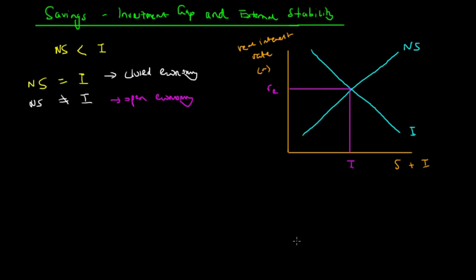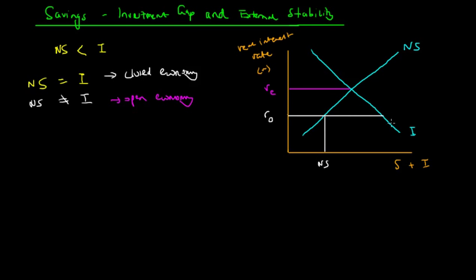At the equilibrium point RE, national savings equals investment and equilibrium is reached. However, in the real world this is not necessarily the case. In Australia, the real interest rate is often lower than equilibrium — at R0 — which means national savings is at a lower point while investment is higher.